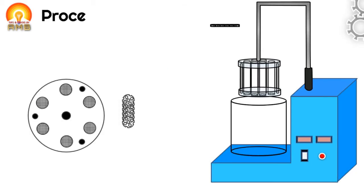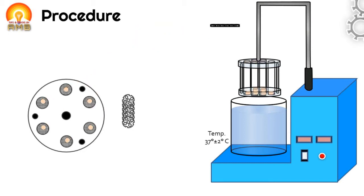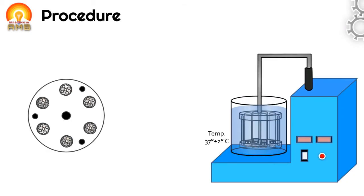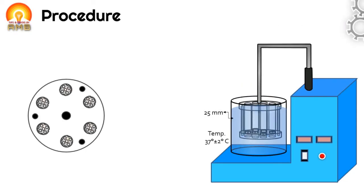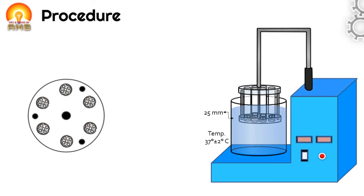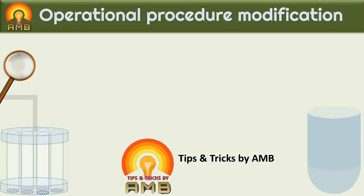Now let's discuss how this test is performed. Fill the beaker with a specific quantity of distilled water or liquid medium as specified in the monograph. The temperature of the liquid medium is maintained at 37°C ± 2°C. Take six tablets randomly from the batch and place one tablet in each tube of the basket rack assembly. Then add one cylindrical guide disc to each tube. Suspend the basket rack assembly in the liquid medium so that the wire mesh at its highest point is at least 25 mm below the surface of the liquid and at its lowest point 25 mm above the bottom of the beaker.